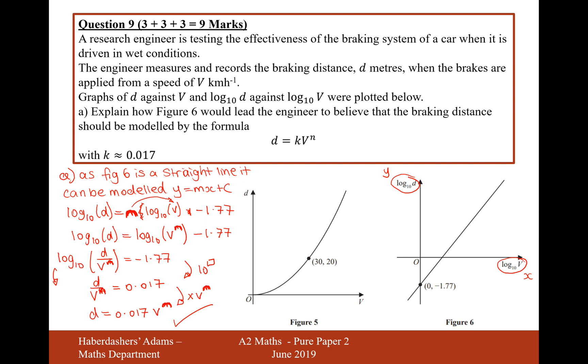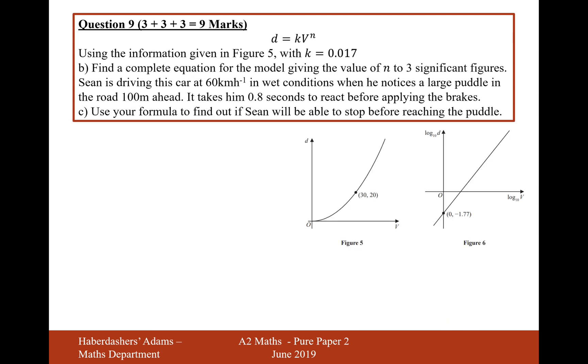Okay, so we're going to take this forward now into part b. Using the information given in figure 5 with k equal to 0.017, find a complete equation for the model giving n to three significant figures. So I expect what they want you to now use is this 30-20 coordinate.